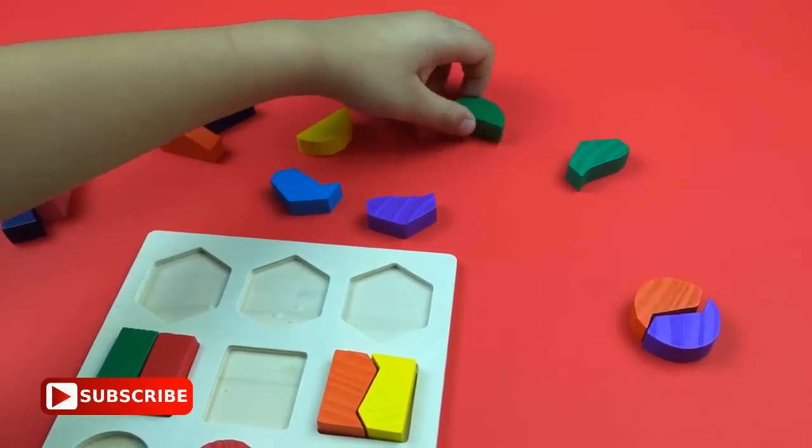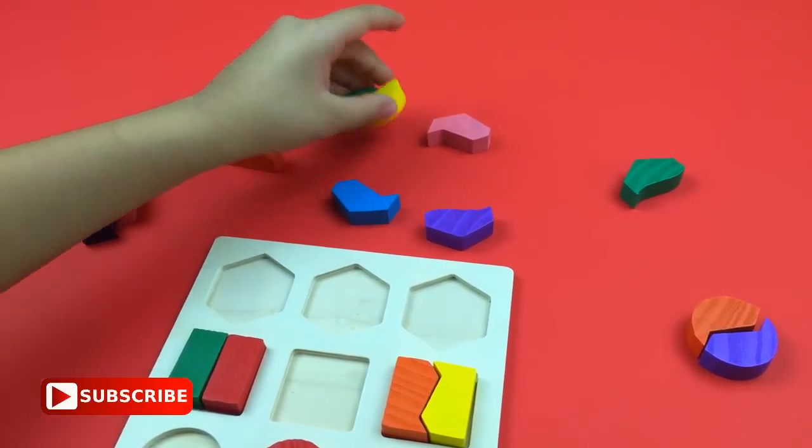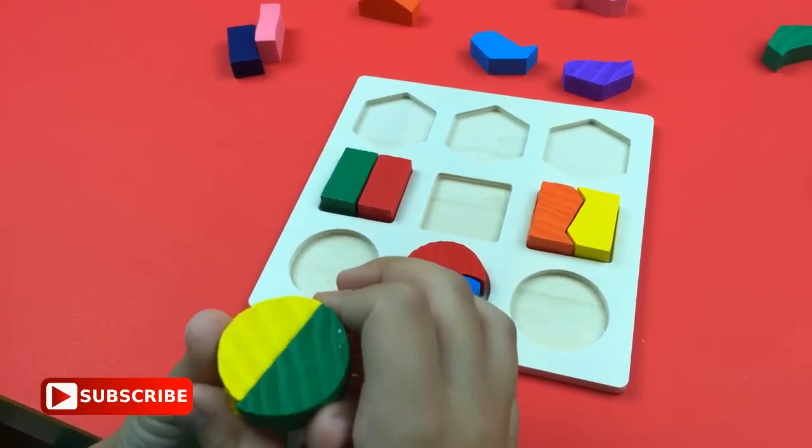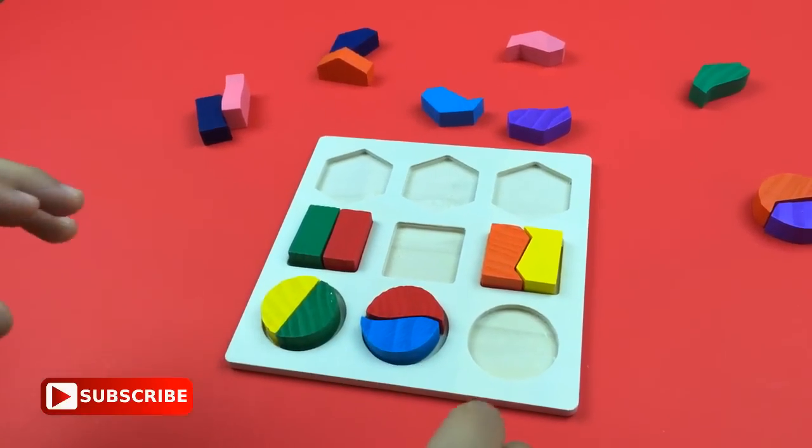I need another shape. Oh, got one! This is green, this is yellow, and they make a circle. I'm getting another shape.